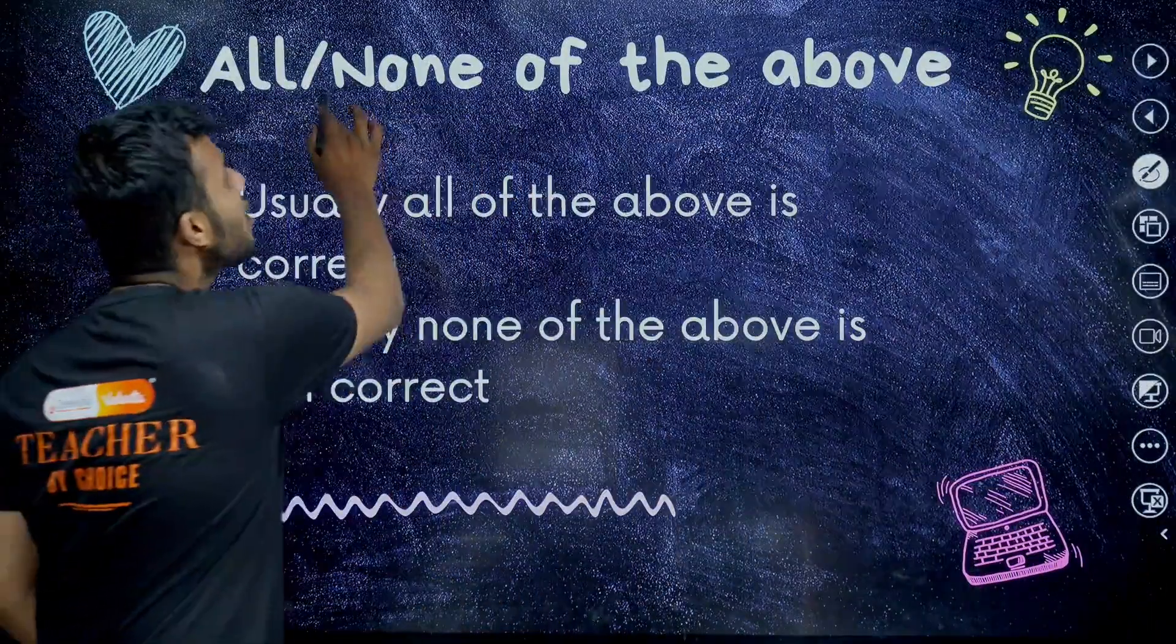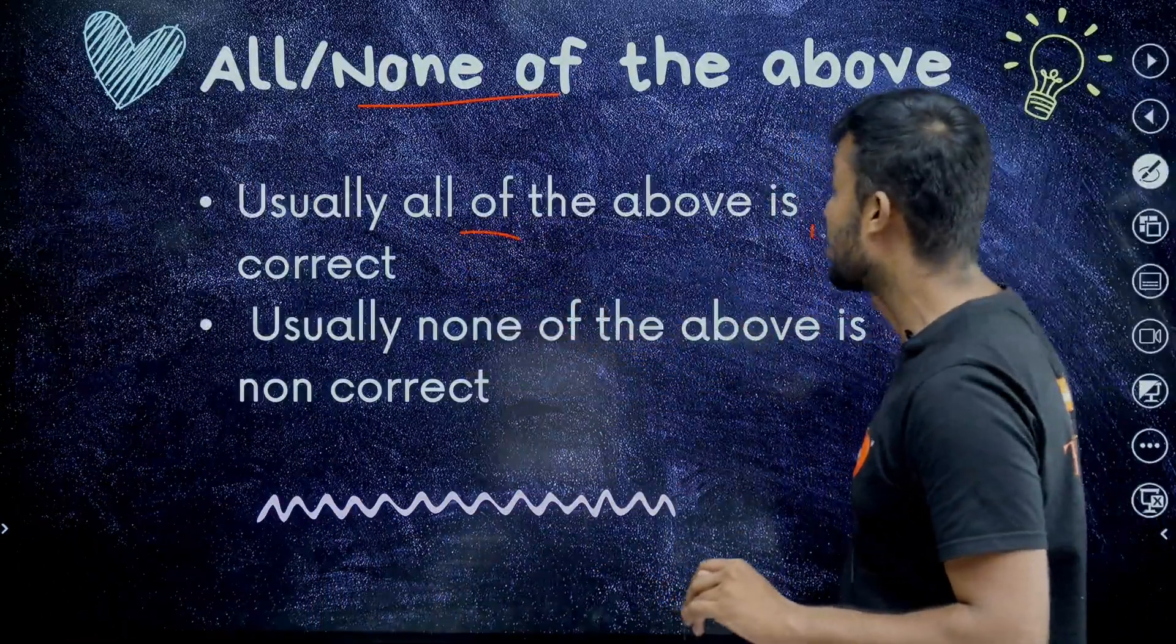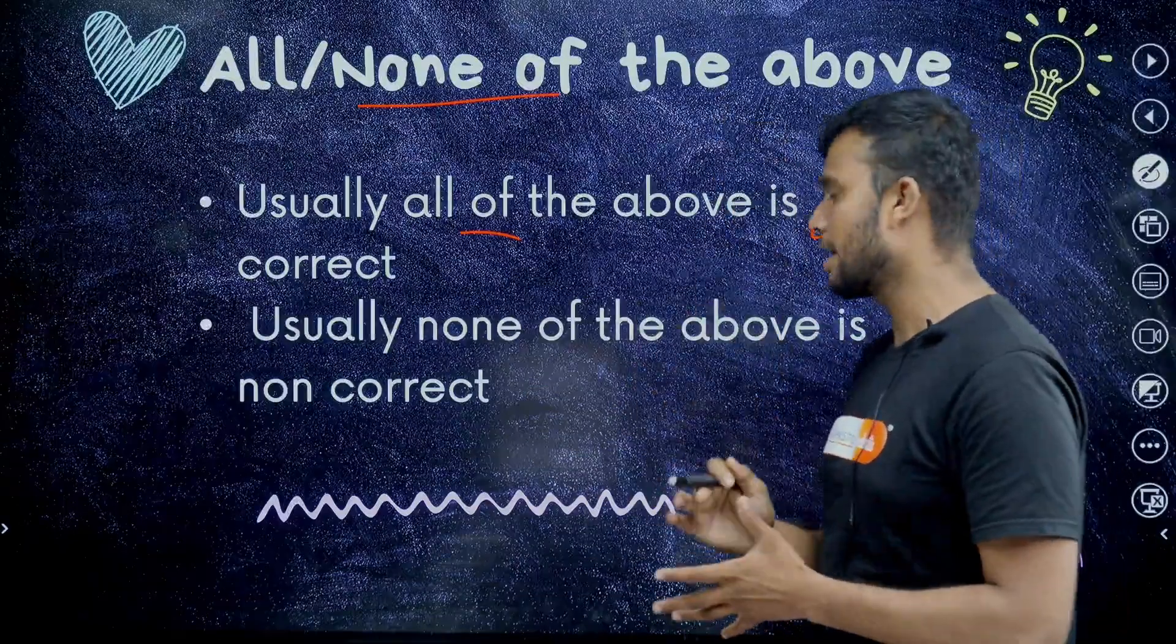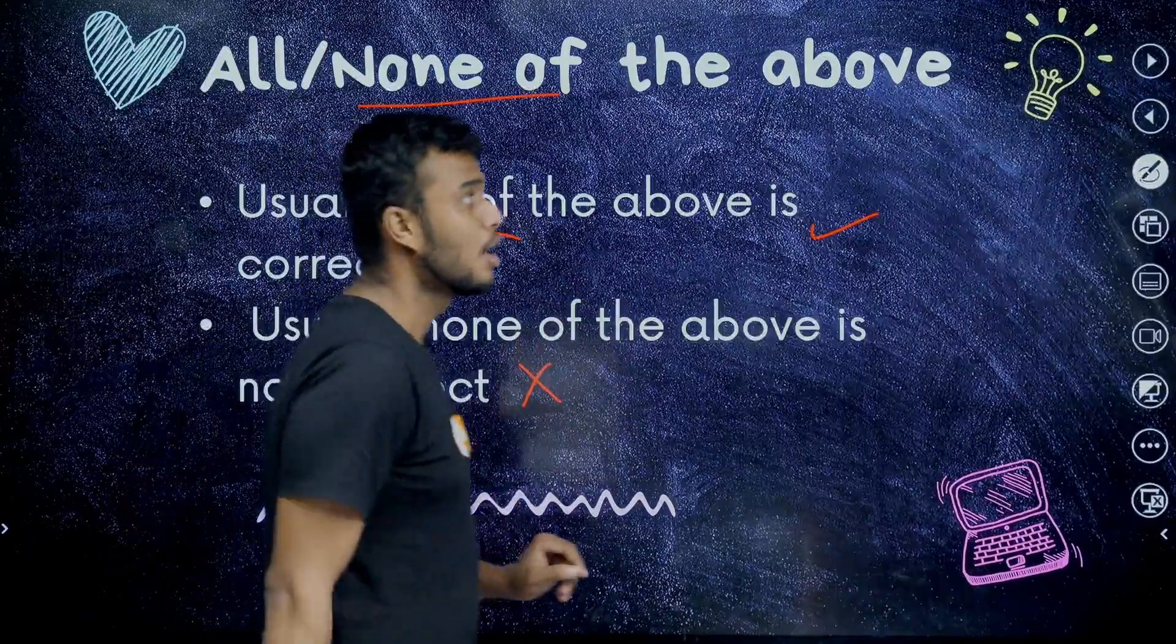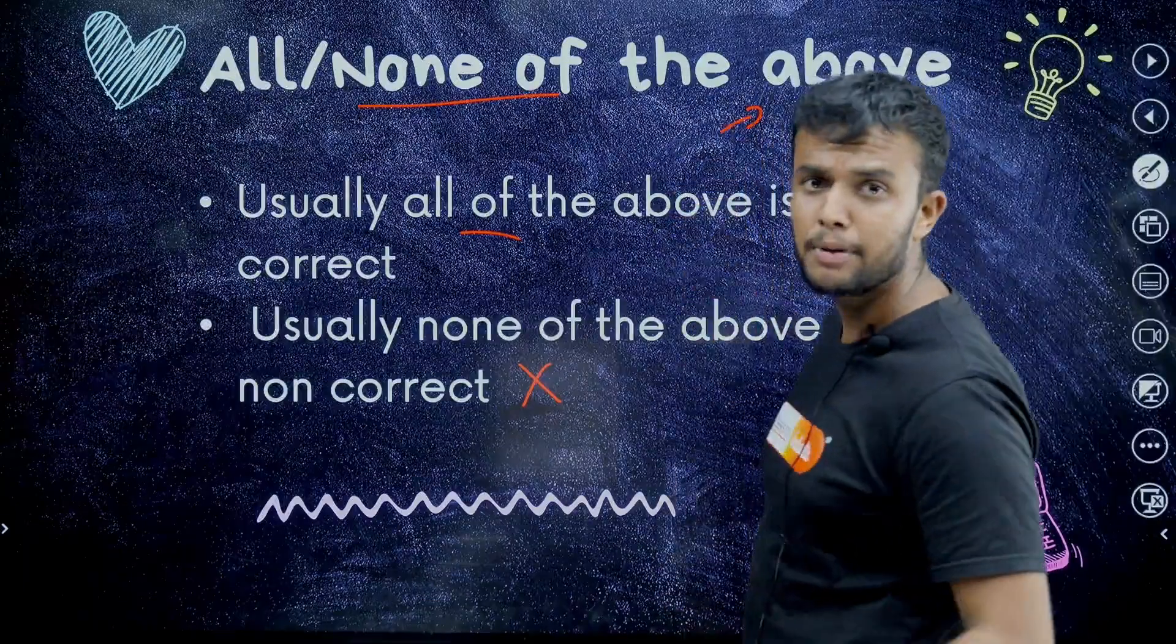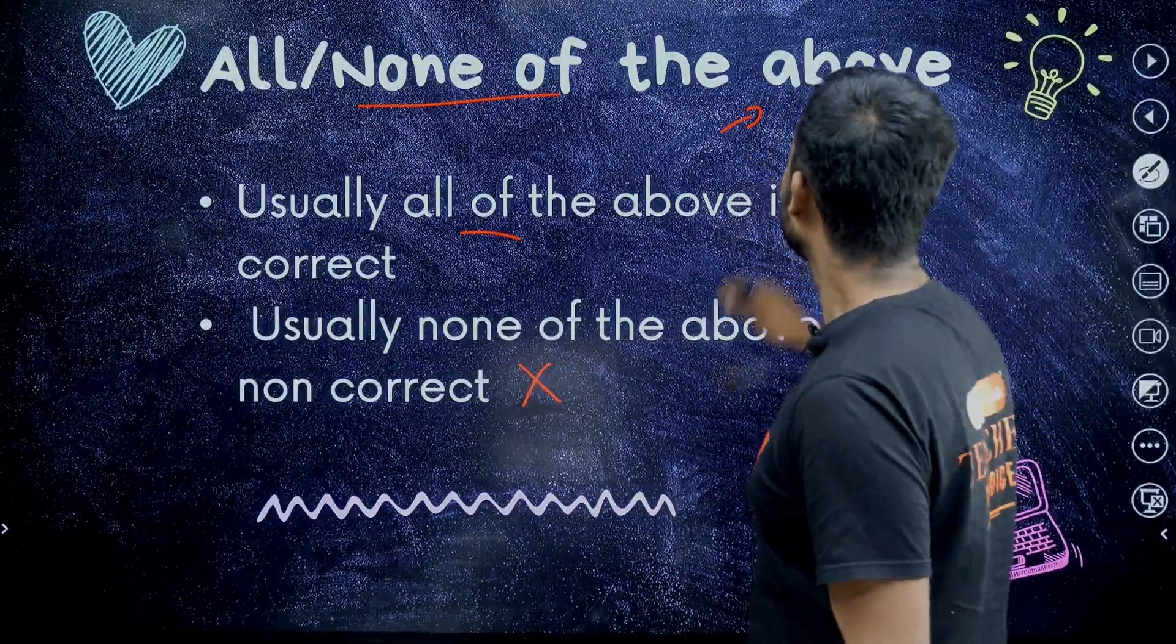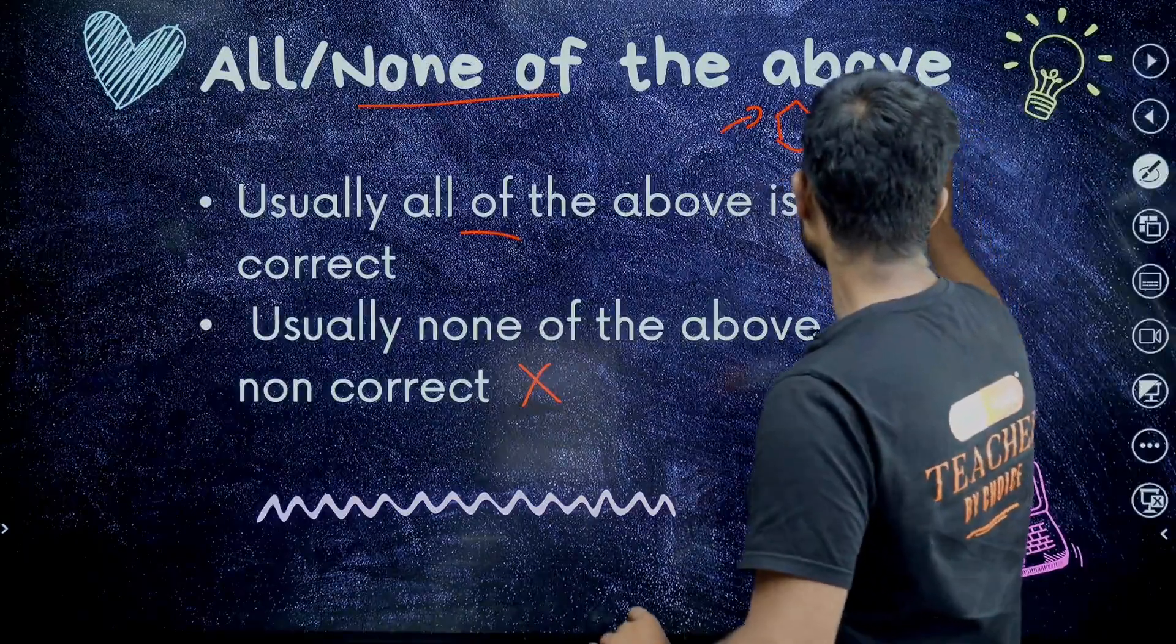Let's move for the second strategy. Second one: all or none of the above. In the case of this, very easy students. Usually all of the above is correct instead of none of the above. Most of the time none of the above is incorrect. This is also one important technique. Most of the time what they give some questions.